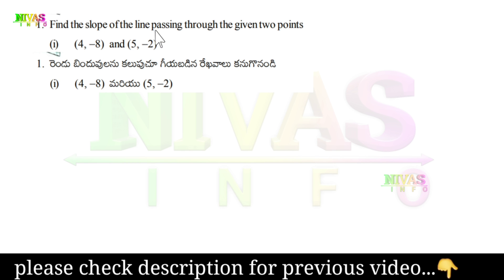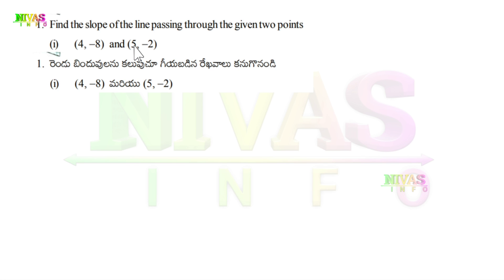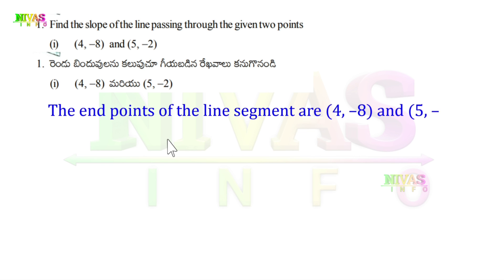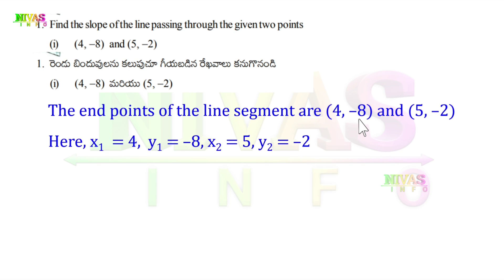Question number one: find the slope of the line passing through the given two points. We are given two points with coordinate values and we need to find the slope of that line segment. The first set is (4, -8) and (5, -2). These are the coordinate values of the line segment endpoints. So here x1 = 4, y1 = -8, x2 = 5, y2 = -2. Now we use the slope formula.